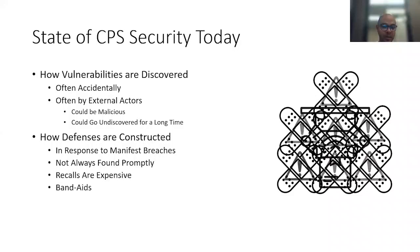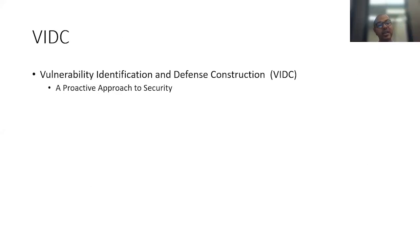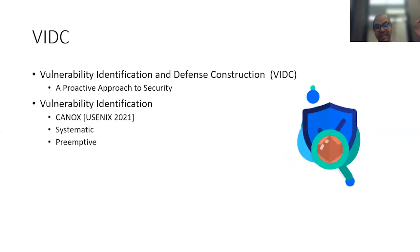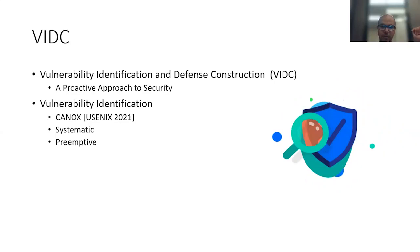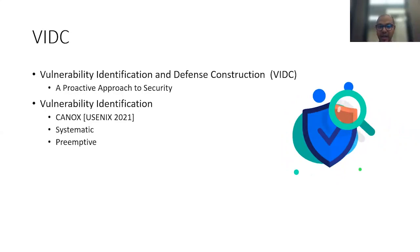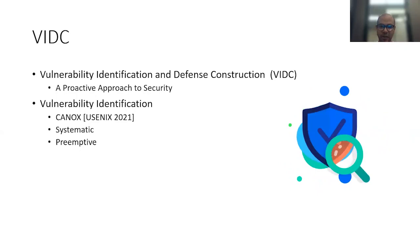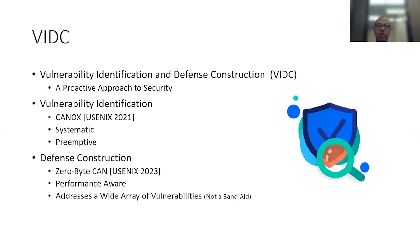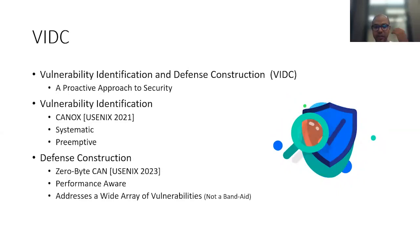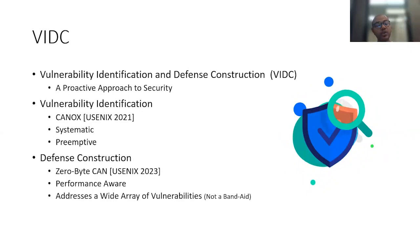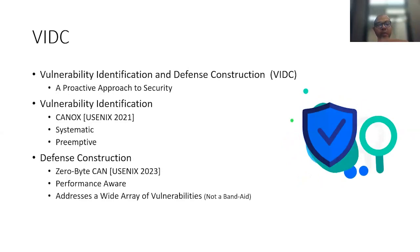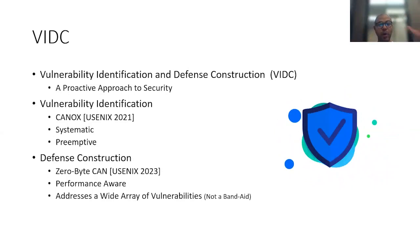What we suggest is a proactive vulnerability identification and defense construction approach. This means we should not wait for vulnerabilities to reveal themselves, but proactively and intentionally look for them. Additionally, the process should be systematic — so even if one day a vulnerability accidentally reveals itself by an external actor, we should systematically investigate its root cause and preemptively look for other vulnerabilities that could stem from that same root cause in the future. When it comes to defense construction, we should aim for defense approaches that take the nature of the system into consideration, especially its performance, and attempt to find solutions that defend against several vulnerabilities at once rather than a bunch of band-aids coalesced into one big thing.